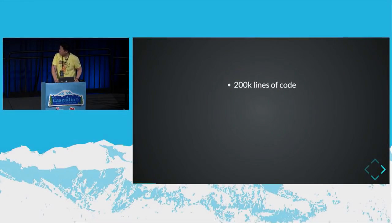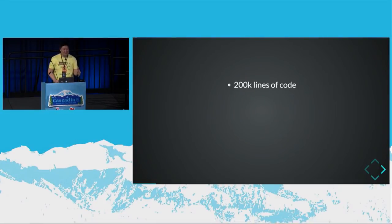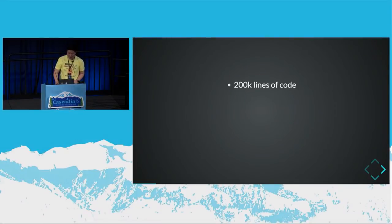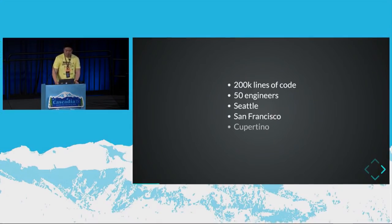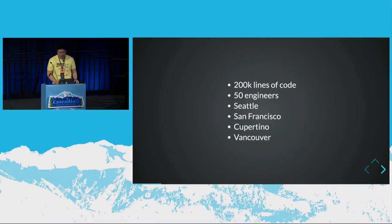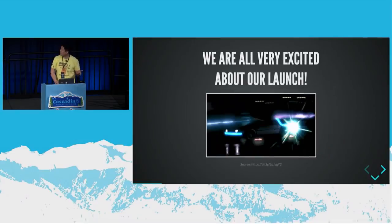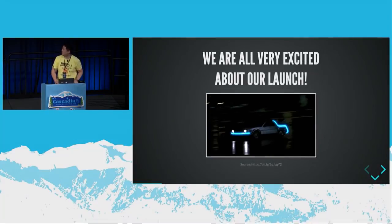Our project is about 200,000 lines of code. This is not a minified compressed version, but the pre-transpiled version of our actual application. With over 50 front-end engineers working on the project across Seattle, San Francisco, Cupertino, and Vancouver — we have a very distributed team. We're all very excited about our launch.